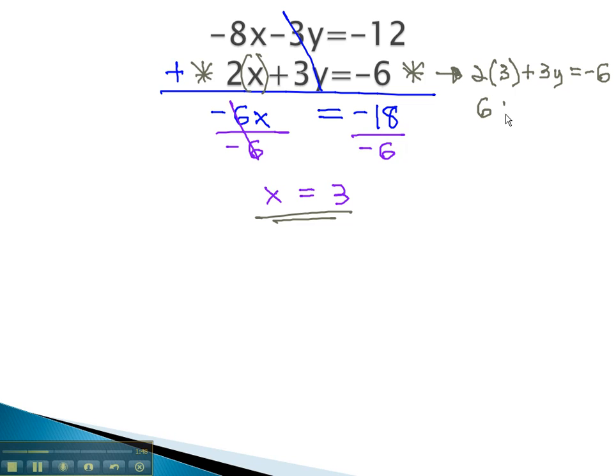2 times 3 is 6, plus 3y equals negative 6. Subtracting 6 from both sides, 3y equals negative 12, and dividing by 3 tells us that y is equal to negative 4.